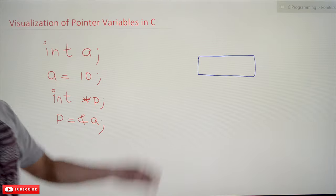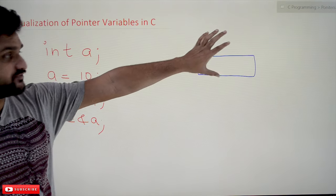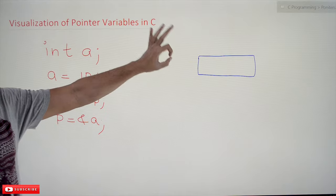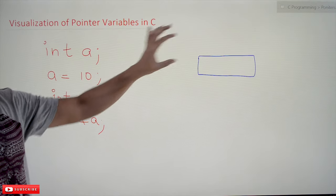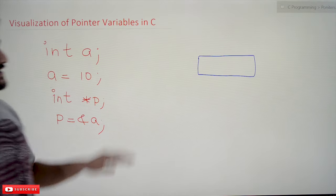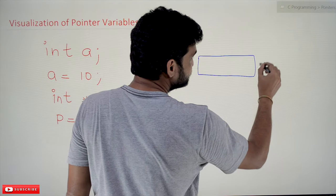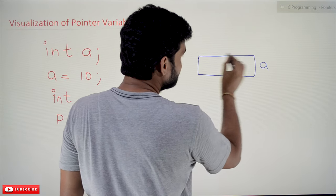This is the memory block that is getting created for an integer. So a is an integer and a memory block has been created. This is for int a.